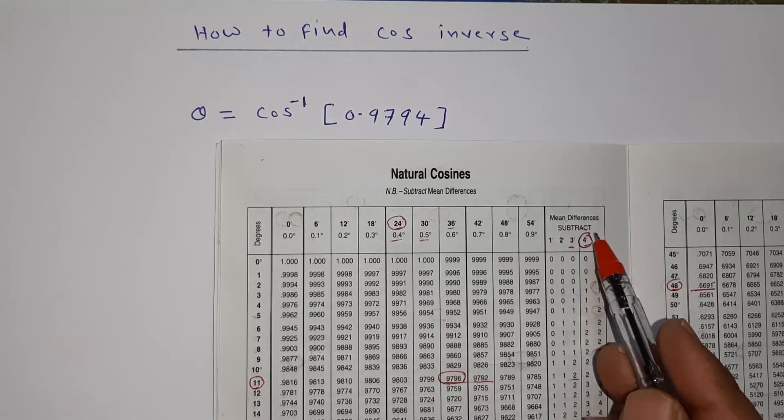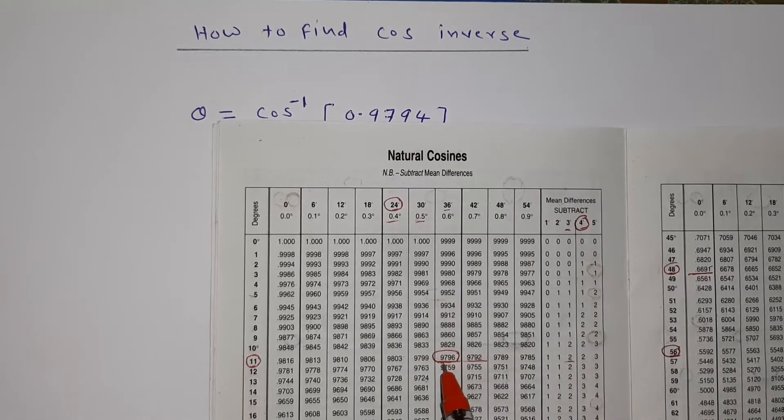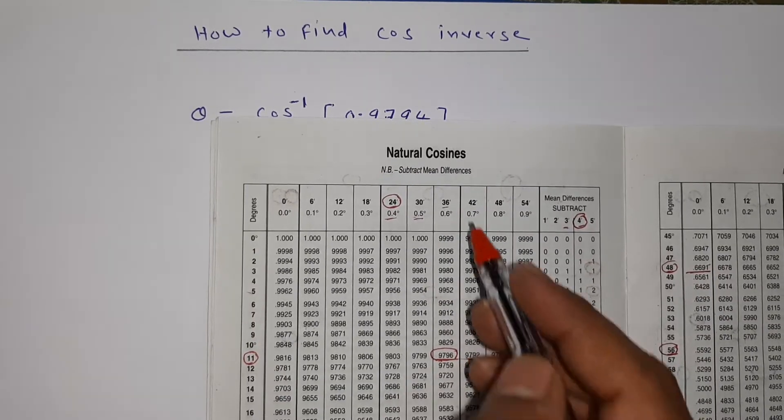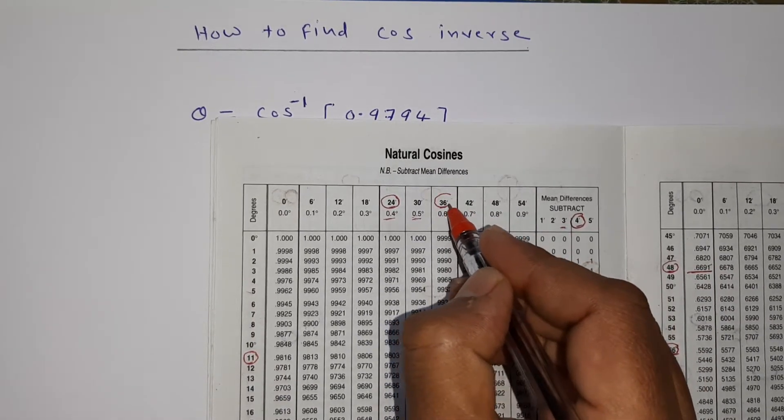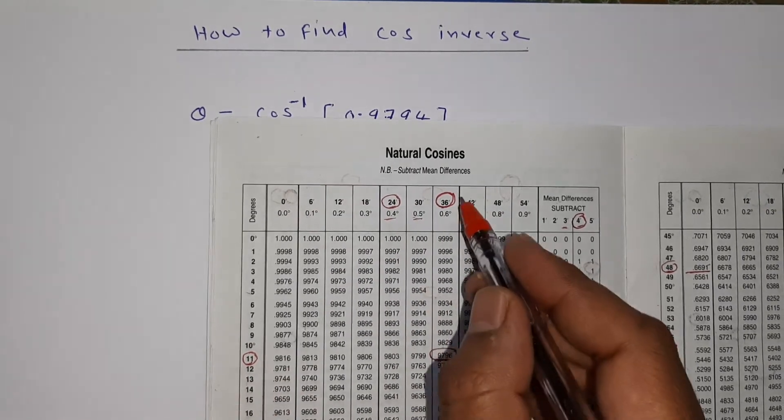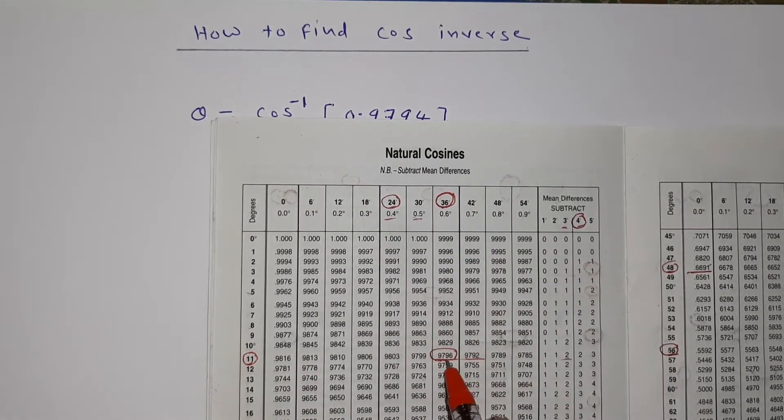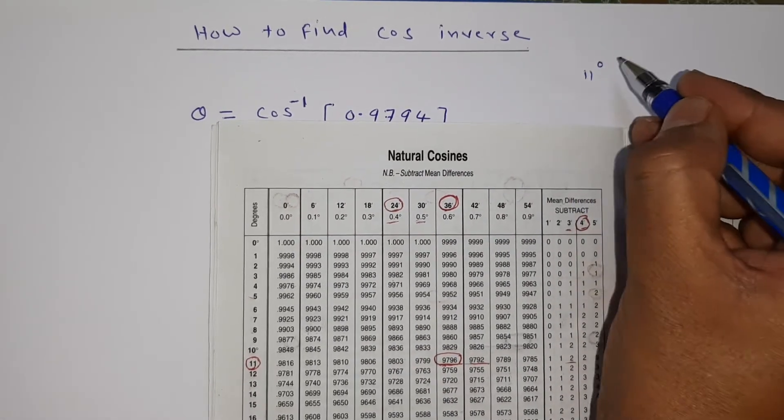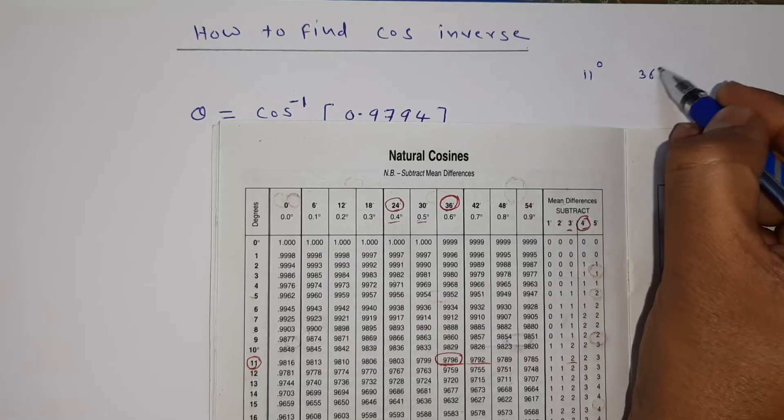9796, 9792 - we have to see this value. The first is 9796. Where is this 9796? We are getting it in 36 minutes. So 11 degrees 36 minutes I got 9796.